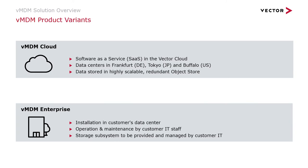The product variants. VMDEM exists in two variants: VMDEM on enterprise or VMDEM in the cloud. In the case of enterprise deployment, Vector will install VMDEM in your company's IT network and the system operation and storage provision is under your responsibility. In the case of cloud deployment, VMDEM is offered as software as a service. All you have to do is provide a connection to the internet — we take care of everything else. For both VMDEM product variants, you will need a Vector front-end tool like vSignalizer or Canopy.